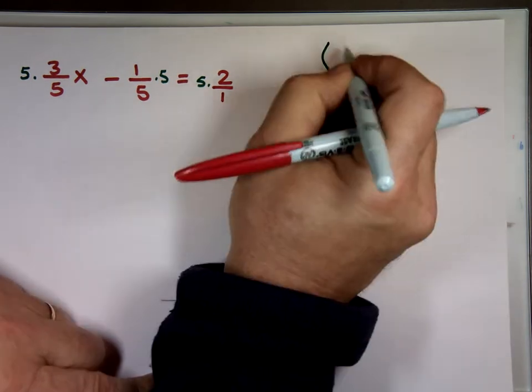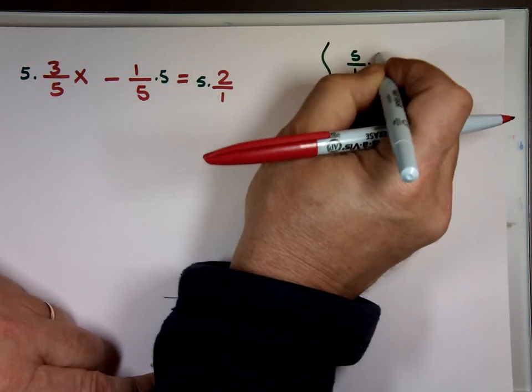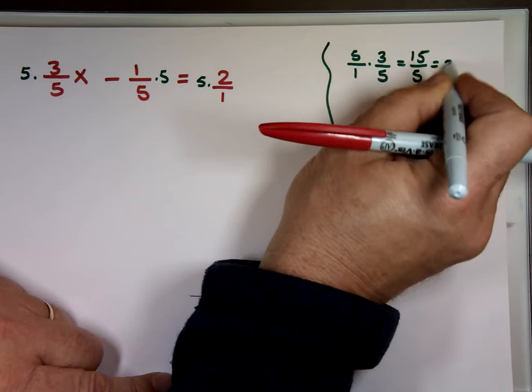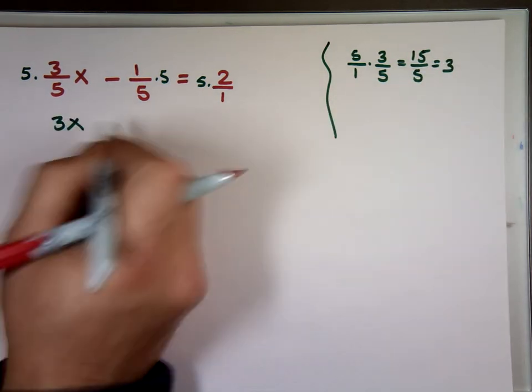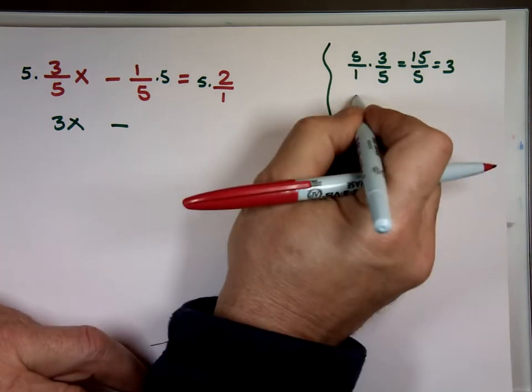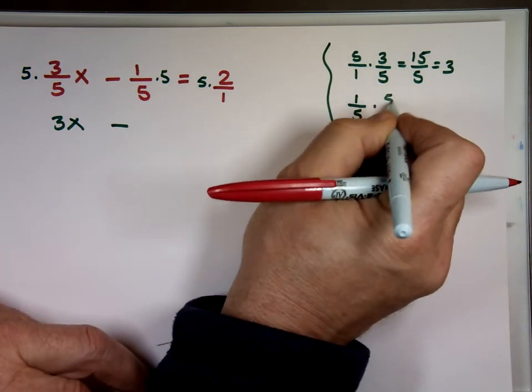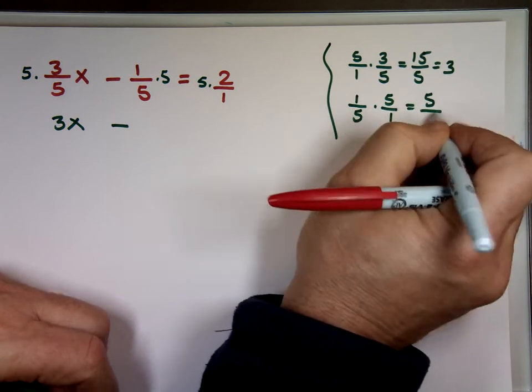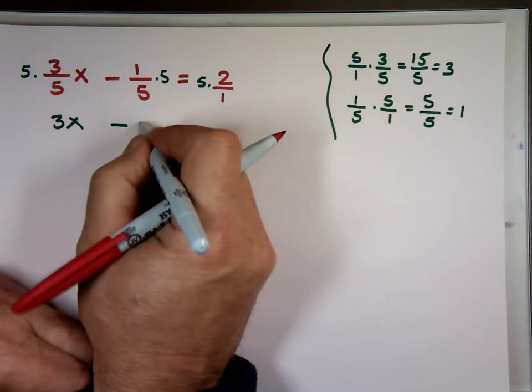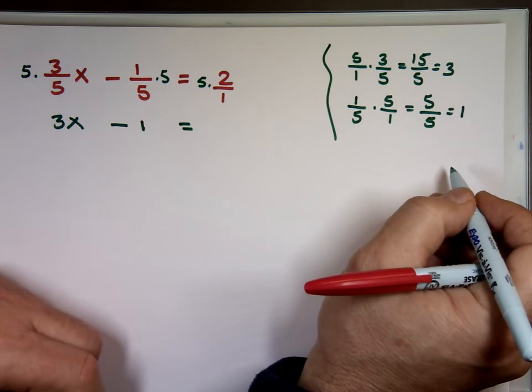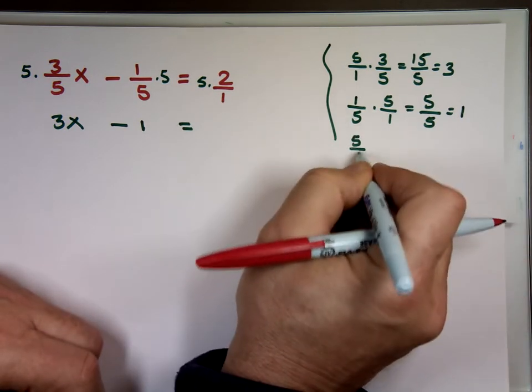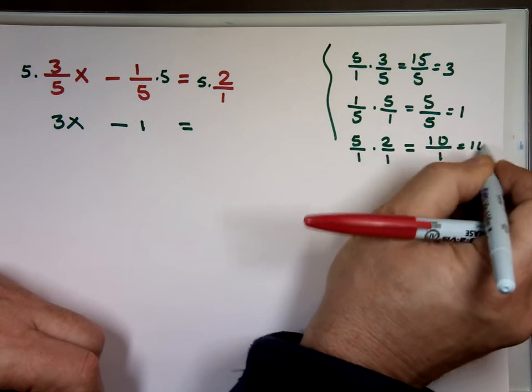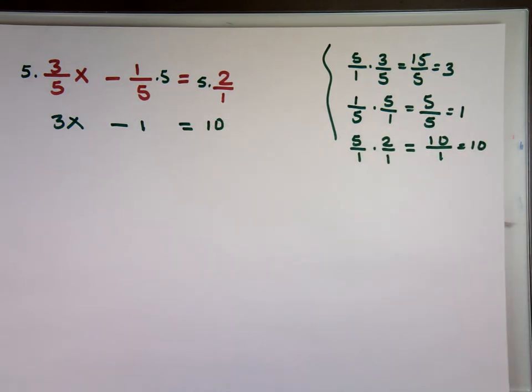Here we go. The first one. 5 over 1 times 3 over 5. What's 5 times 3? 15. 15 over 5. Which is what? 3. That's 3X. The next one. 1 over 5 times 5 or 5 over 1. 1 times 5. 5. Over 5 times 1. And that's a 1. And the last one. 5 over 1 times 2 over 1. 5 times 2. 10 over 1. Which is? 10. The fractions are gone.